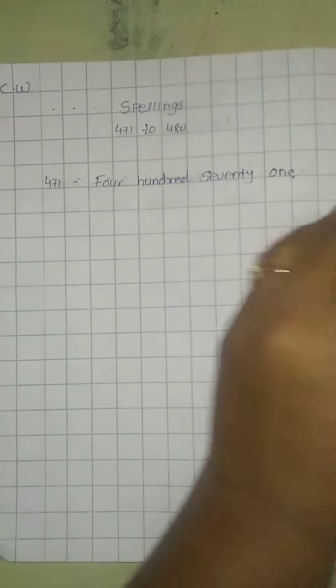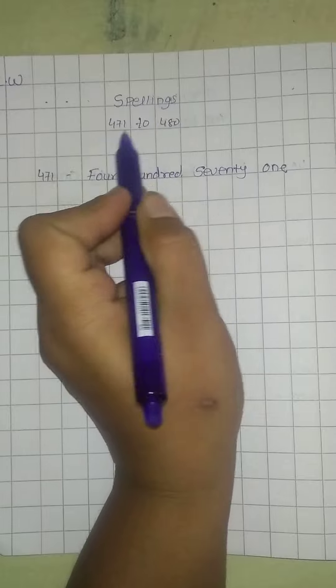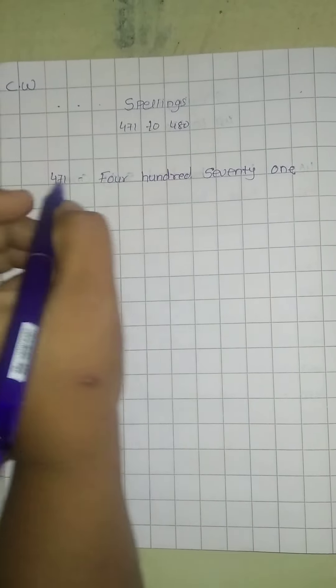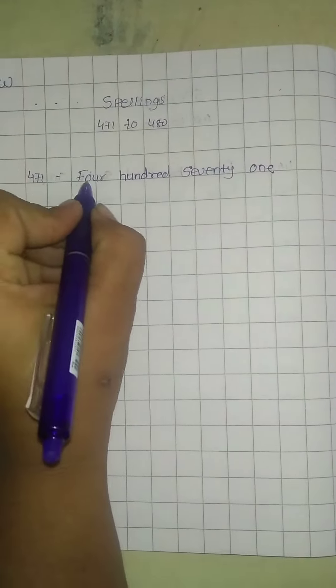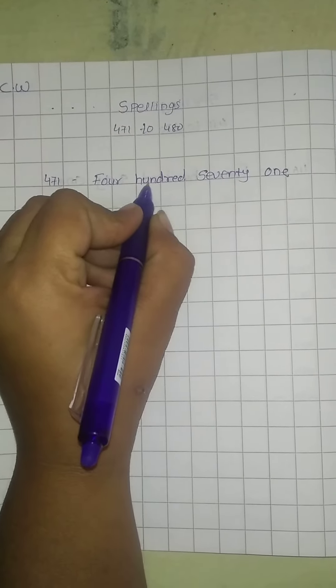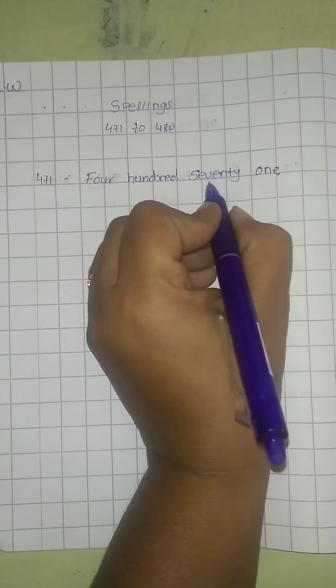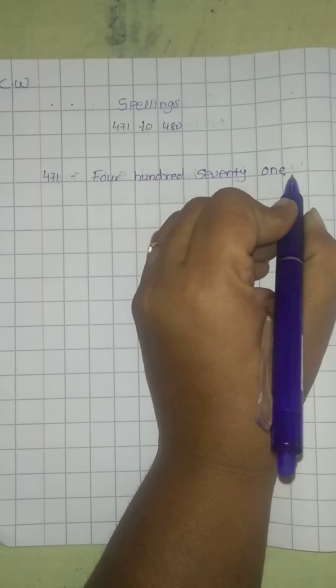Now we have to learn the spellings about 471 to 480. 471, FOUR, HUNDRED, SEVENTY, ONE.